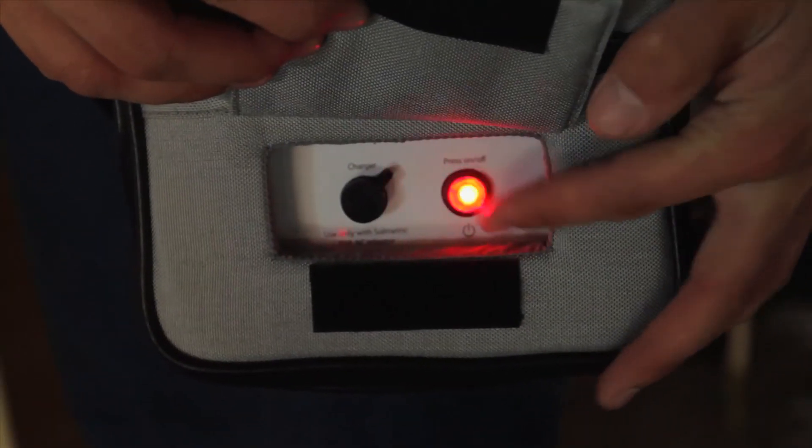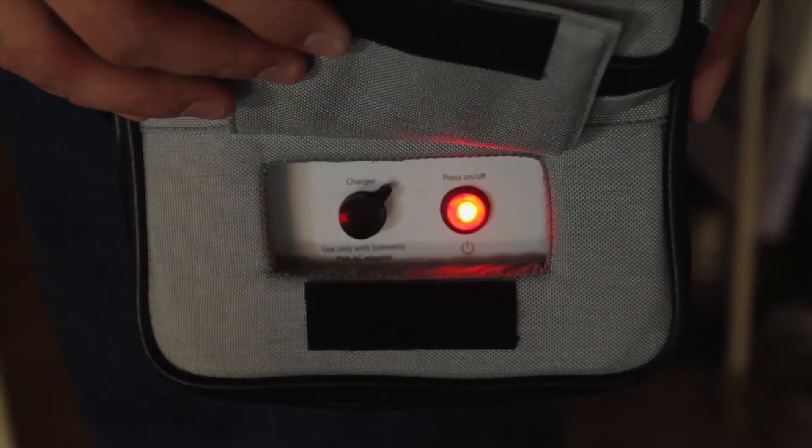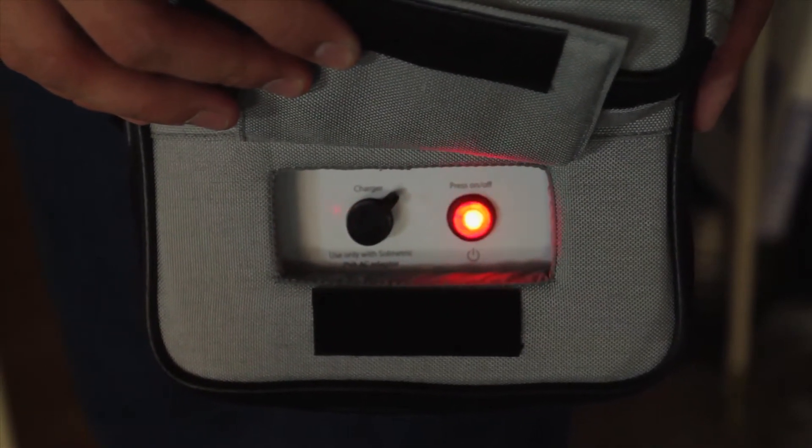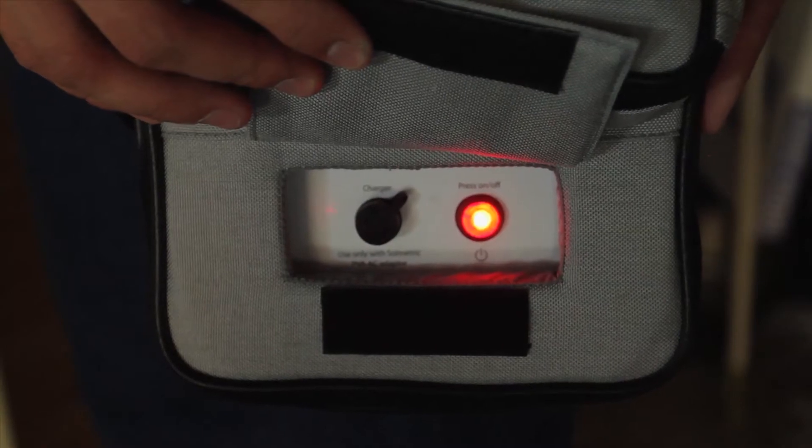Once it is connected to a module or string, turn the measurement unit on by pressing the power button, which is located at the front side of the unit next to the charging port. The light on the button will blink to indicate that the unit is searching for the wireless USB adapter.